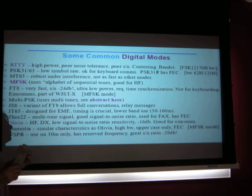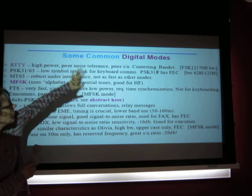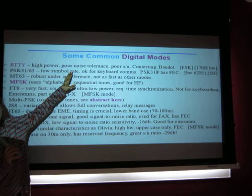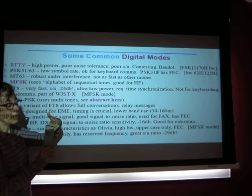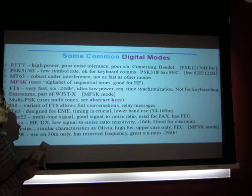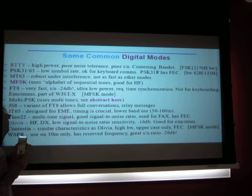Here's a list of common digital modes. RTTY is the oldest mode — uses high power, doesn't tolerate noise well, uses the Baudot encoding set, and is a form of FSK with typically 170 Hz bandwidth, used in contesting. PSK31 has a low symbol rate, good for keyboarding. Different modes trade off data rate, error correction, noise handling, and bandwidth — you choose the best mode for your purpose.